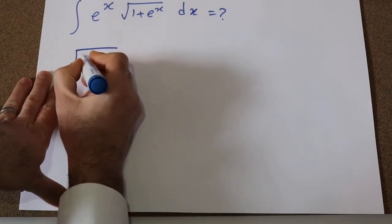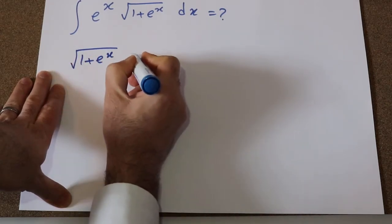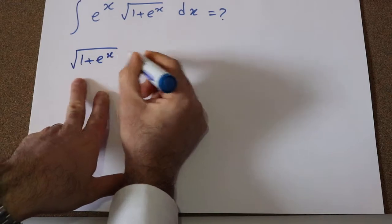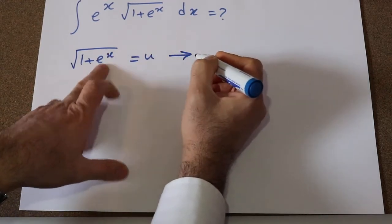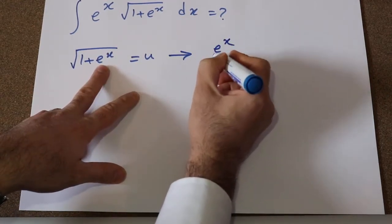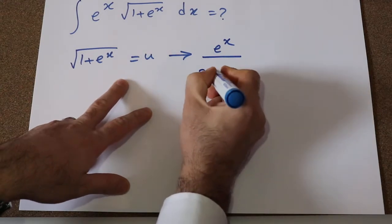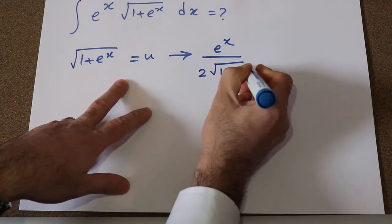So if I define square root of 1 plus e^x as u, and if you take the derivative from each side of this equation, this one will be equal to e^x divided by 2 square root of 1 plus e^x.